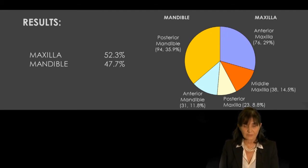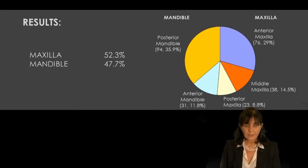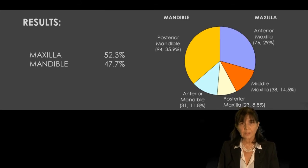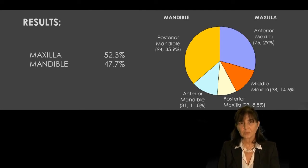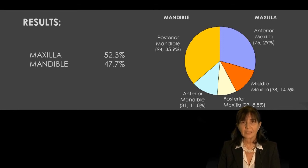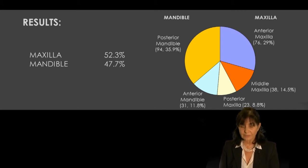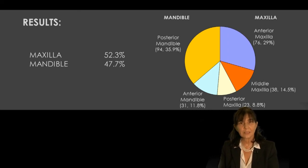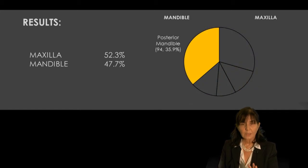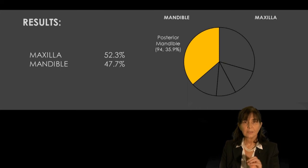This is a retrospective study from 1998 to 2010. In the mandible, most bone grafts were performed in the posterior area, which is logical since we lose posterior teeth first. In the maxilla, different areas required grafting, with about 30% in the anterior area. Today — Part 1 — we focus only on posterior mandible onlay bone grafting.